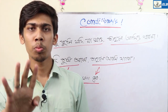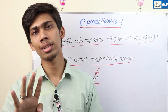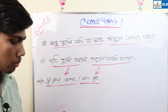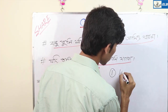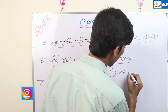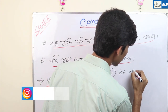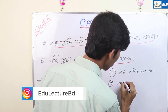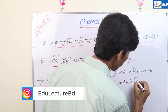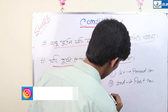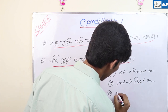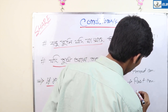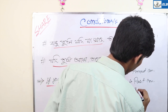In English grammar, there are 4 conditional sentences. Number 1: First conditional — present conditional. Number 2: Second conditional — past conditional. Number 3: Third conditional — perfect conditional. Number 4: Fourth conditional.